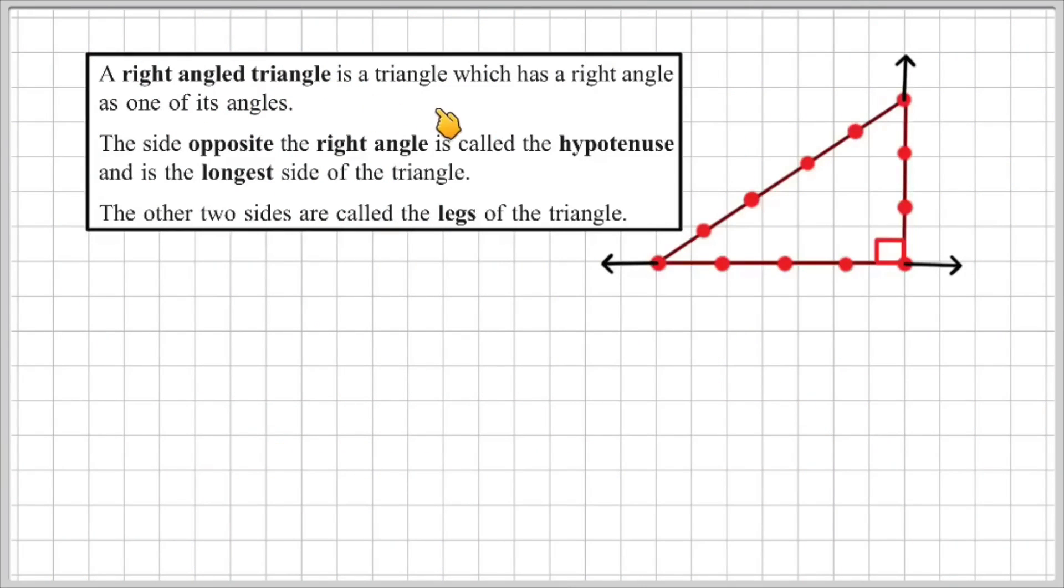So a right angle triangle is a triangle which has a right angle as one of its angles. The side opposite the right angle is called the hypotenuse. So here's my right angle and opposite the right angle is the hypotenuse. This is the longest side of the triangle. The other two sides are called legs. So I've labeled this leg A and leg B.